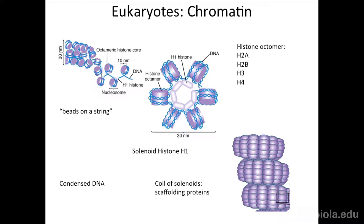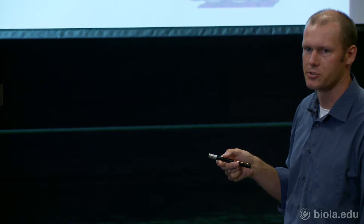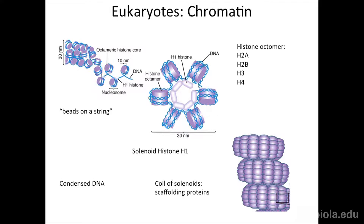Those nucleosomes — which only wrapped DNA around twice — are going to be organized into much more complex structures. Each of these nucleosomes is wrapped around each other into what's called a solenoid. A solenoid consists of six nucleosomes all wrapped around each other, held together by an additional protein called histone H1. All these proteins so far — the eight proteins in the nucleosome plus histone H1 — are all histones. H1 is what holds them together into the solenoid.